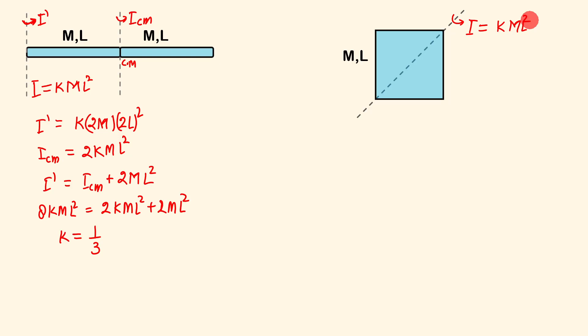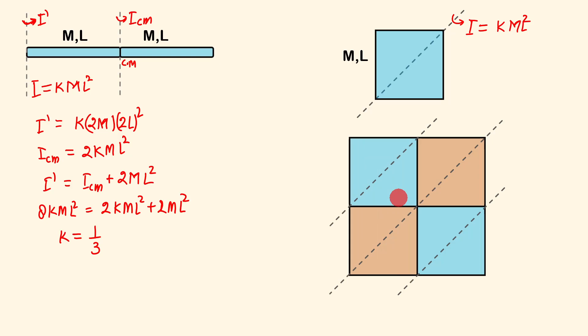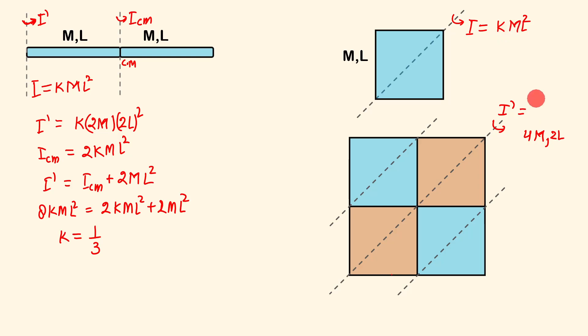I will again use the same logic. I will take three more such squares and put them together so it becomes a square of double side and four times the mass — so 4M and length 2L. About this particular axis, the moment of inertia of these four together is I-dash, and that will be equal to K times 4M times (2L)², which becomes 16KML².